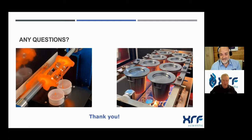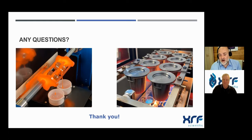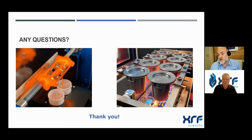Thank you Frederick. We have a couple of questions. The first is: how long does a zirconium crucible last — how many samples, how many cycles? It depends on the type of fusion. For metallics, the crucible suffers more because the reaction is very intense and exothermic. We can count on about 100 fusions per crucible — it could be a little more or less. It also depends on the thickness of the crucible. At XRF Scientific, we use crucibles with a thickness of 1.2 to 1.6 mm, which are very strong and rigid.